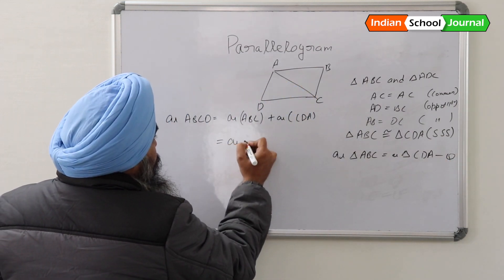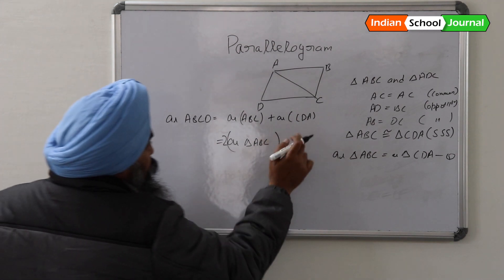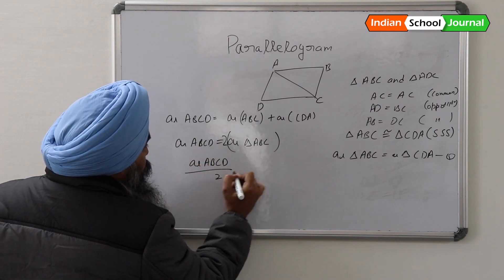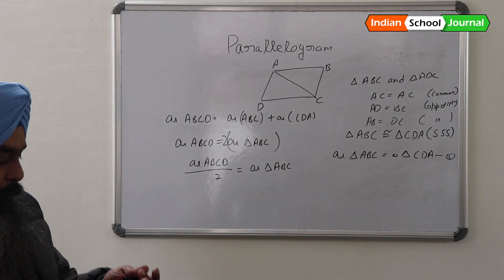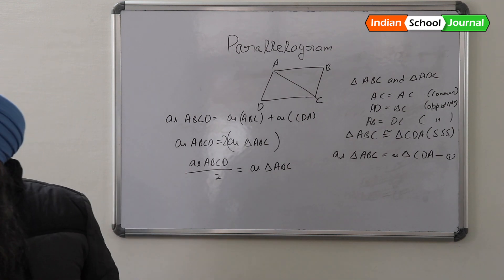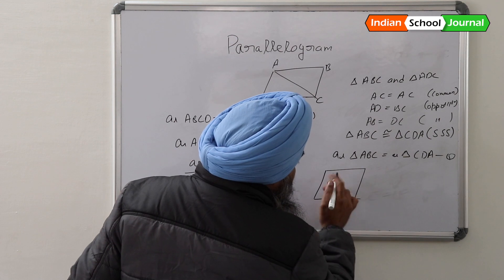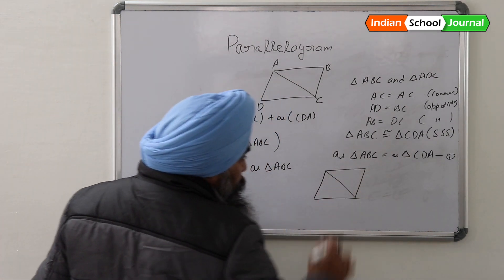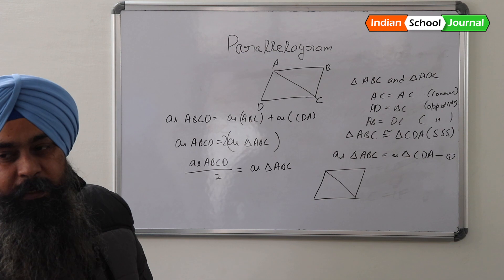Can I write that area of triangle ABC multiplied by two is equal to area of ABCD? Because these two are equal? Yes. So area of ABCD divided by two is equal to area of triangle ABC. There is a conclusion: if there is a triangle having the same base as a parallelogram and lying between the same parallel lines, it will have area half the area of the parallelogram.